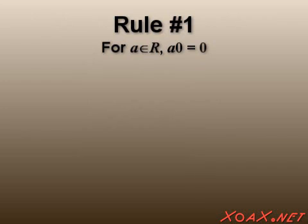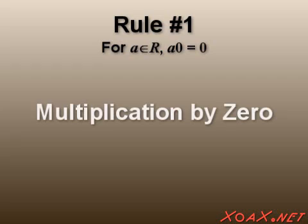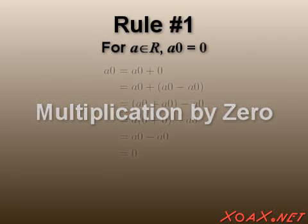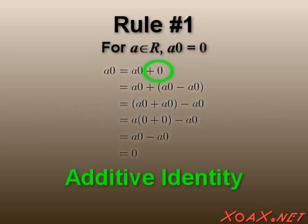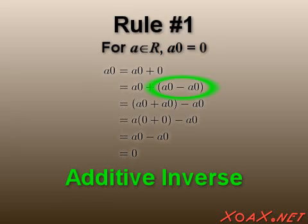Our first consequence, or rule, states that any real number times zero is zero. I will refer to this as the multiplication by zero property. To derive this, we begin by using the additive identity to add zero. Then we use the property of additive inverses to replace zero by a times zero and its additive inverse.